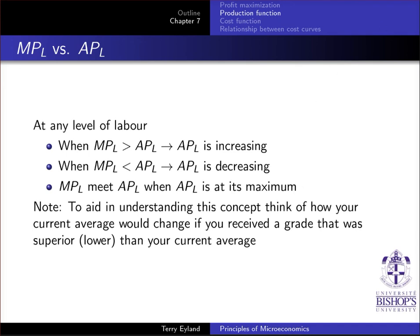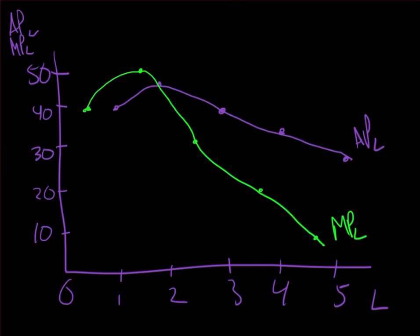When marginal productivity is smaller than the average productivity, average productivity must be decreasing. And marginal productivity will always meet average productivity at its maximum. If we think about the graph we had here, this is the case. When marginal productivity was above average productivity, average productivity was increasing. When it's somewhere below, we see that average productivity is falling, and it crosses at its maximum point.